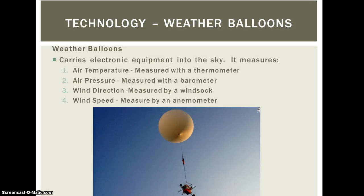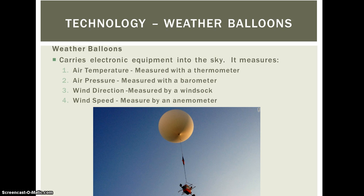Most of this is about technology. A piece of technology that's been around for years are weather balloons — a very simple technology, but they can gather a lot of information. It's a giant balloon with weather instruments attached. As it goes up into the atmosphere, it records data. The four major instruments they carry are: a thermometer to measure air temperature, a barometer to measure air pressure, a wind sock or device to measure wind direction, and an anemometer to measure wind speed.